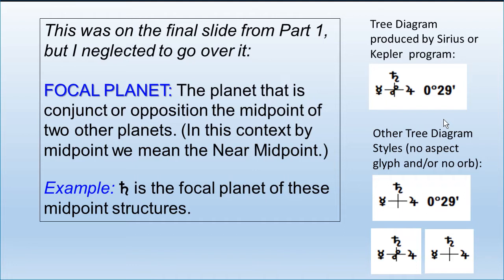Number one, the focal planet. In a midpoint structure — for example, the one shown on the right side — Saturn is the focal planet. Saturn is opposition the midpoint of Mercury and Jupiter with a 29-minute orb. This is the midpoint structure from the birth chart of Julia Roberts covered in the first video. That planet at the midpoint is called the focal planet.